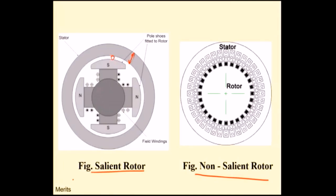In the salient pole rotor, the air gap is not uniform, whereas in the non-salient pole rotor, the air gap is uniform. This is the key difference between the two types of rotor. So which one is better?